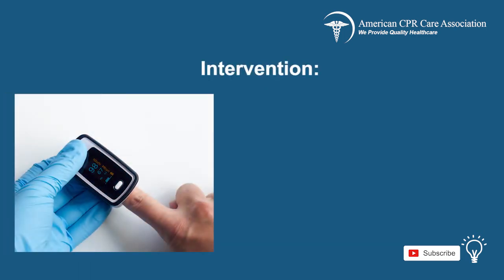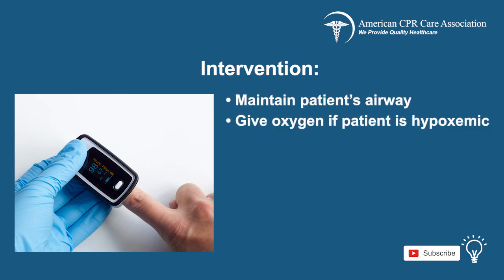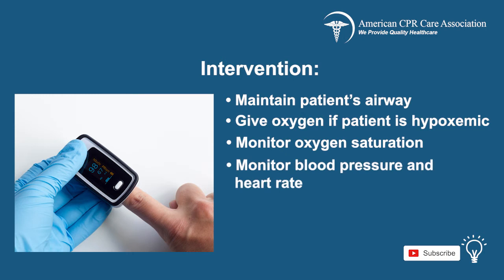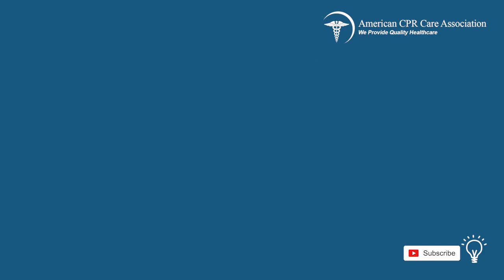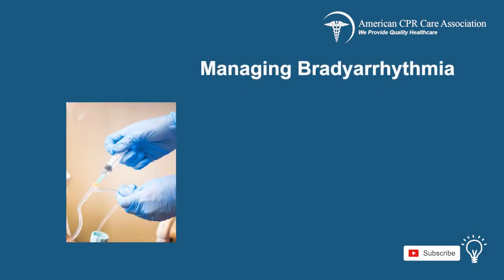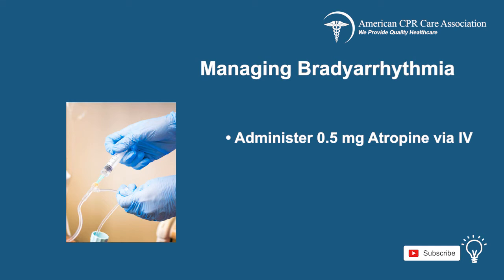Now, start with interventions. Maintain the patient's airway. Help with breathing and give oxygen if the patient is hypoxemic, and monitor their oxygen saturation. Monitor blood pressure and heart rate, and conduct a 12-lead ECG and diagnose the patient. Check for persistent bradyarrhythmia. For management at the hospital, if bradyarrhythmia has been diagnosed as present, then administer atropine at a dose of 0.5 mg via IV access and repeat up to a maximum dose of 3 mg.